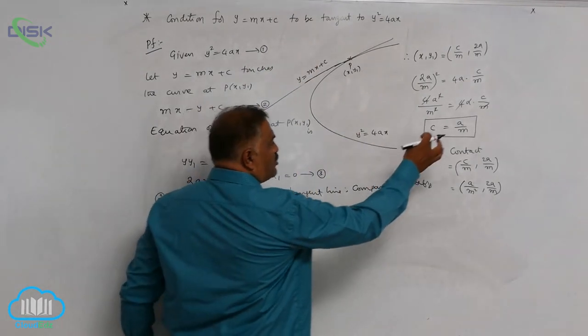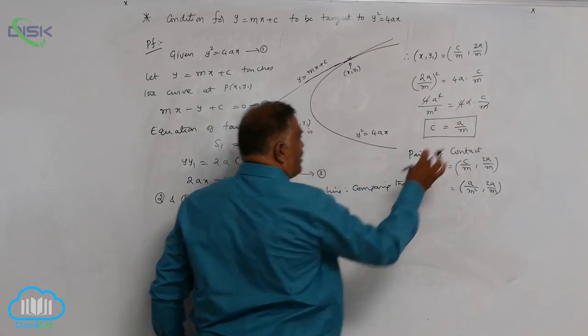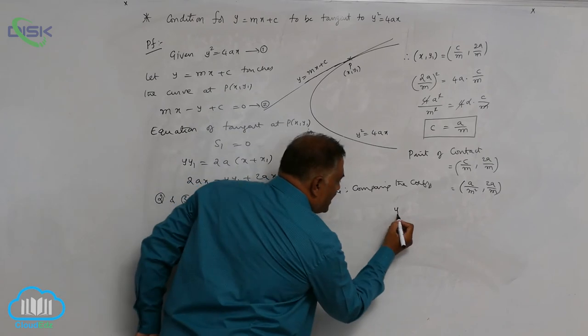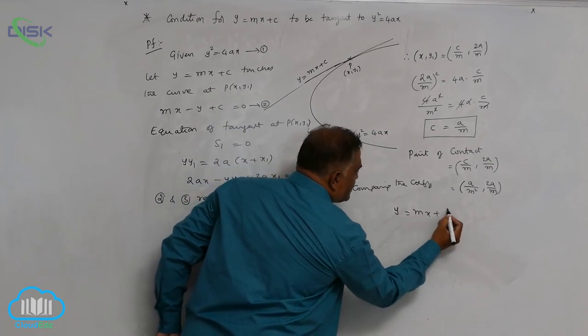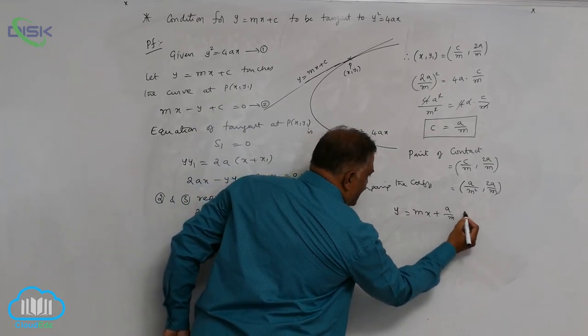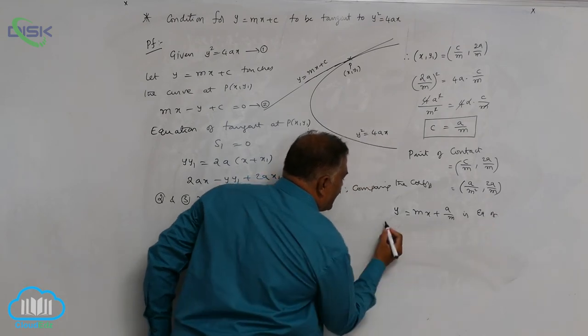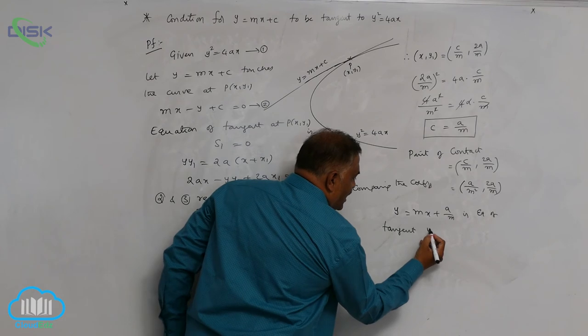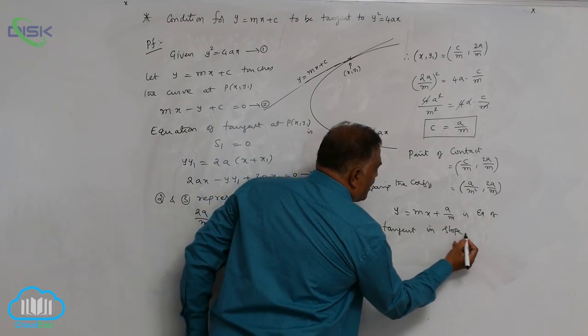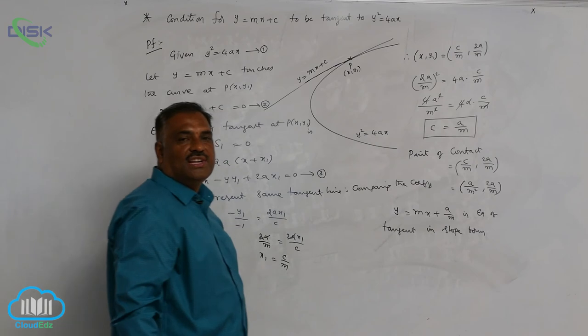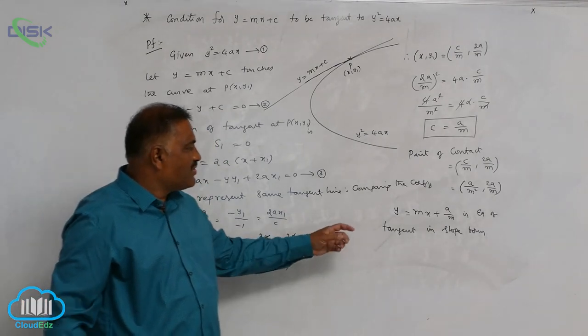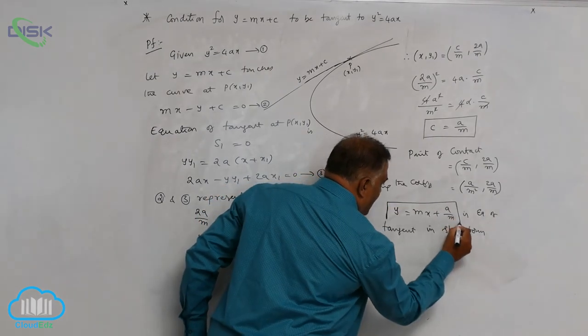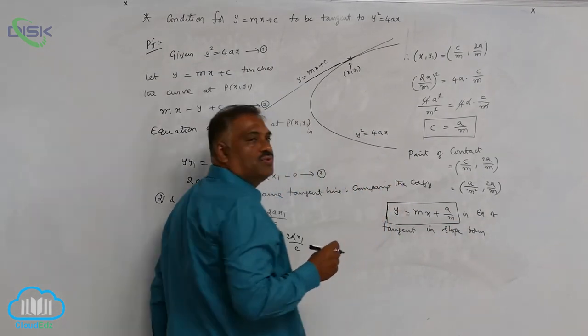We can substitute c = a/m in our equation. You can see y = mx + a/m is the equation of tangent in slope form because everything is in terms of m. This is a very important and useful result.